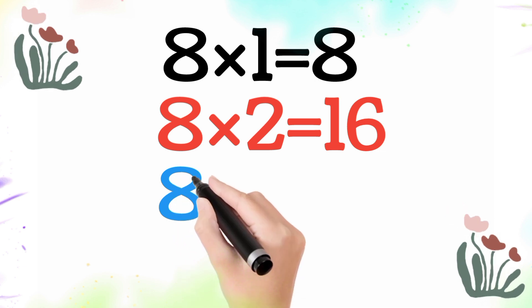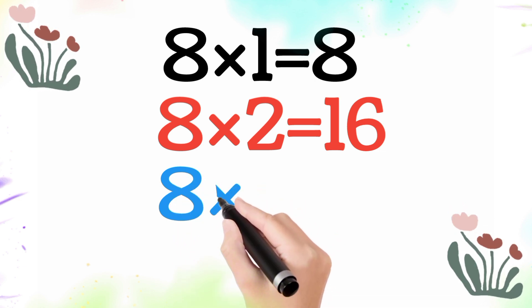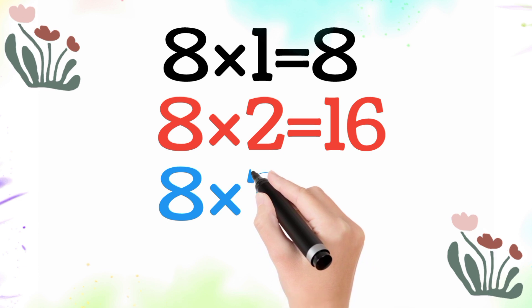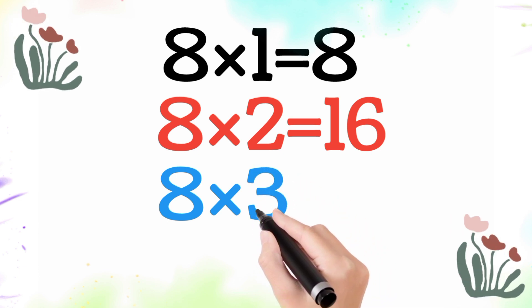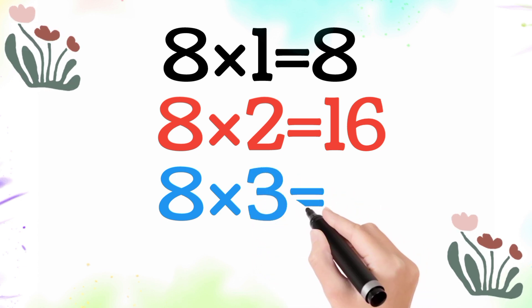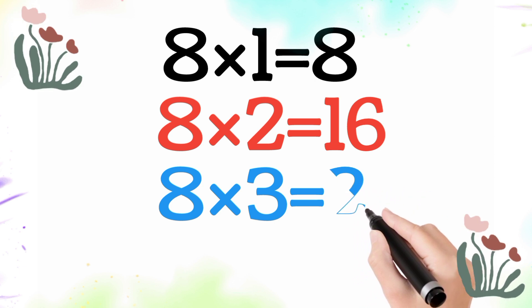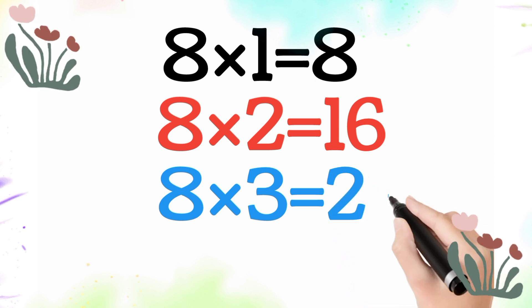8 multiplied by 3 is equal 24. So 8 times 3 is 24.